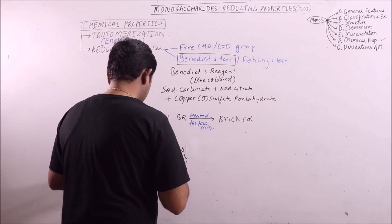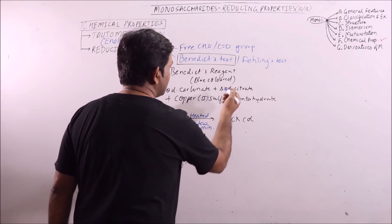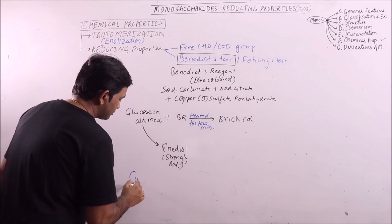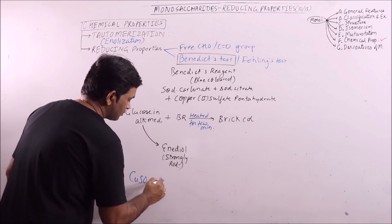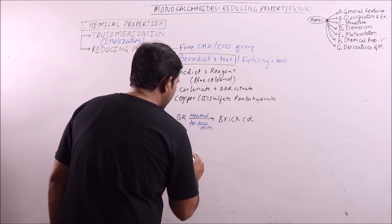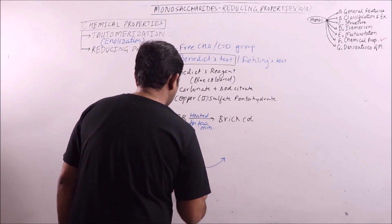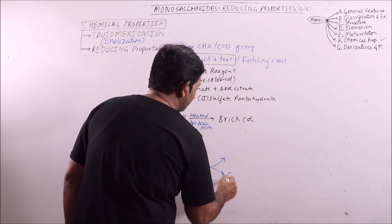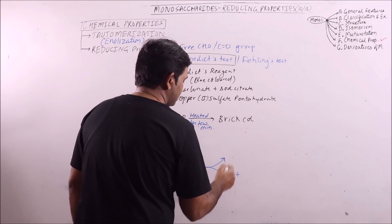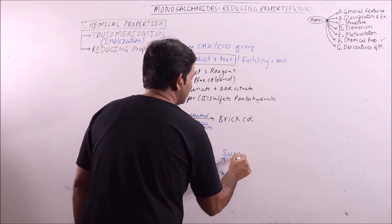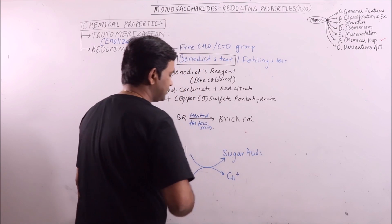And the copper sulphate means cupric ions are there. So enediols will reduce the cupric ions to cuprous ions and they will themselves oxidize to sugar acids.